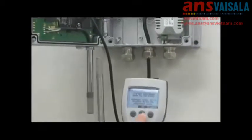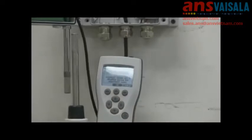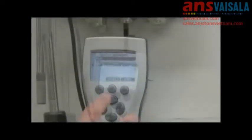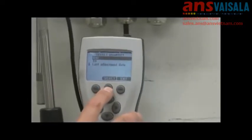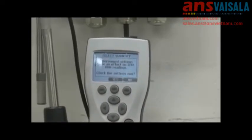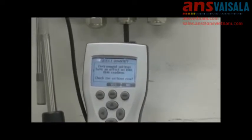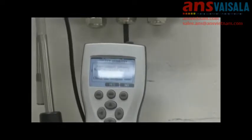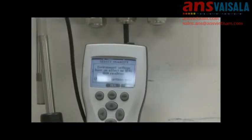Step 4. Press OK and select RH. Now you'll see the message environmental settings have an effect on RH, check settings now. This is simply verifying that the sensors are both at atmospheric pressure and not at different pressures, so we select no.